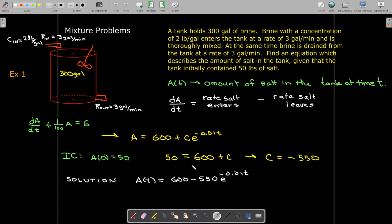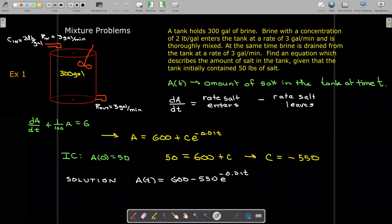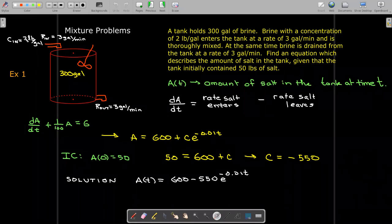And so we can see that we have a transient term. So as t goes to infinity, the amount of salt in the tank approaches 600 pounds. And that should make sense. The concentration which is coming in is 2 pounds per gallon.